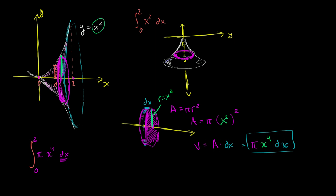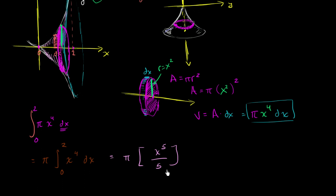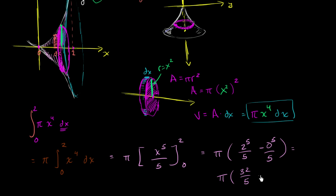This is now just taking a standard definite integral. We take pi out, so it's going to be equal to pi times the integral from 0 to 2 of x to the fourth dx. The antiderivative of x to the fourth is x to the fifth over 5. So this is pi times x to the fifth over 5, evaluated from 0 to 2. That gives us pi times 2 to the fifth over 5 minus 0 to the fifth over 5. Since 2 to the fifth is 32, this equals pi times 32 over 5 minus 0, which is equal to 32 pi over 5. And we're done — we figured out the volume of this wacky shape.